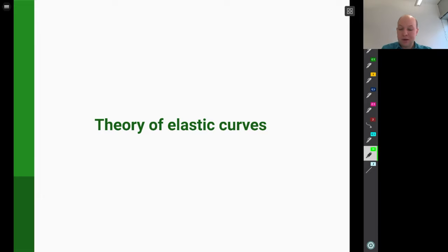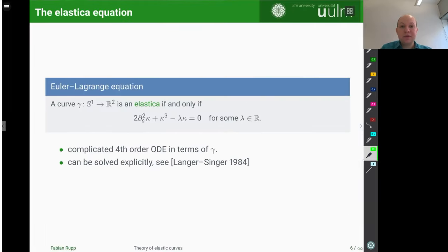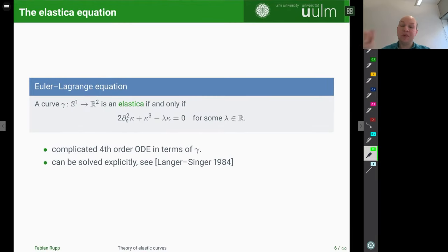I will now give a brief introduction to the relevant results in the theory of elastic curves, but this is by no means complete. I just want to quickly highlight the things that we will use later on. So the first thing, what is this famous equation, this Elastica equation, how can we characterize the λ Elastica? And one can compute that being a λ Elastica means that this Euler-Lagrange equation has to be satisfied.